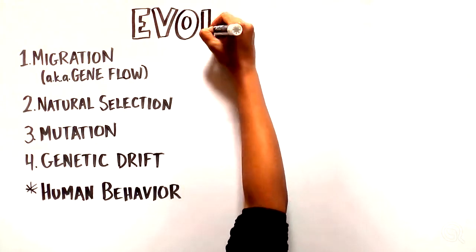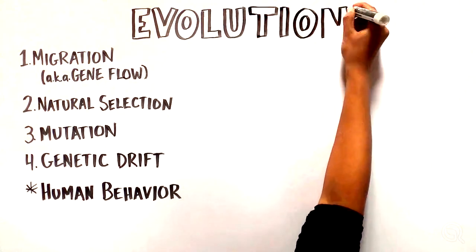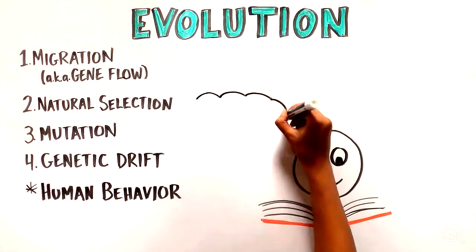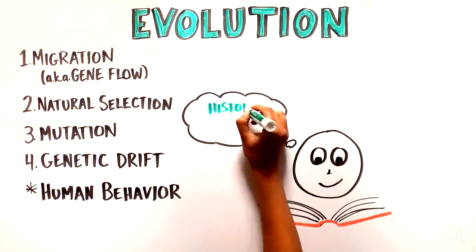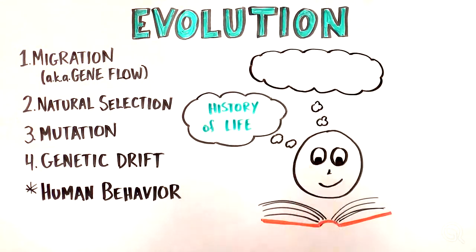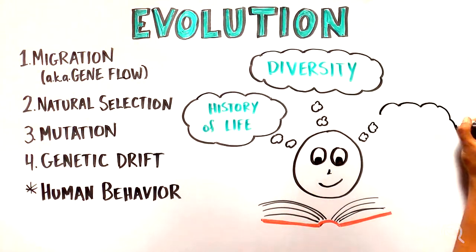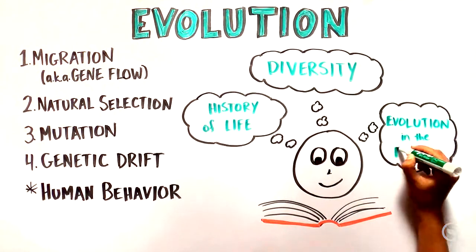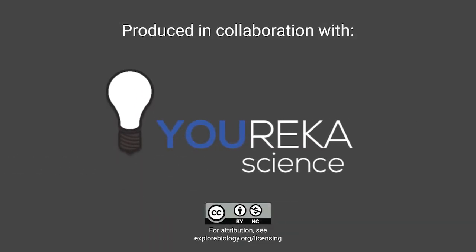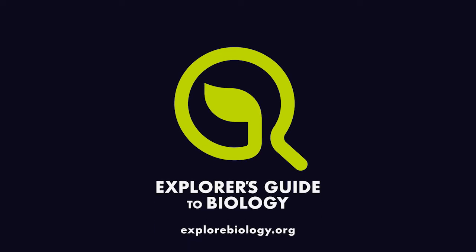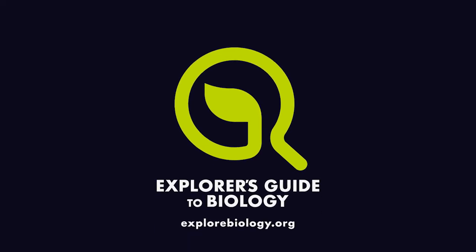As you've seen, evolution occurs from one generation to the next and is influenced by multiple factors: migration, natural selection, mutation, and genetic drift. Studying evolution allows us to understand the history of life on Earth and the remarkable diversity that comes with it, as well as providing a framework for thinking about evolution in future generations.